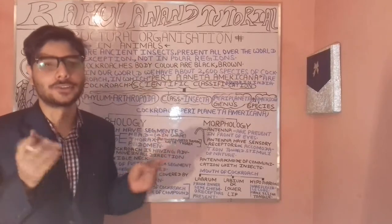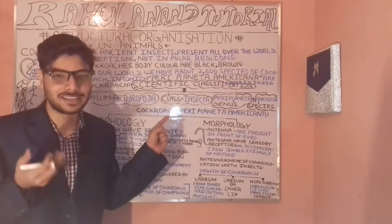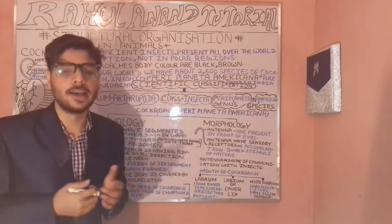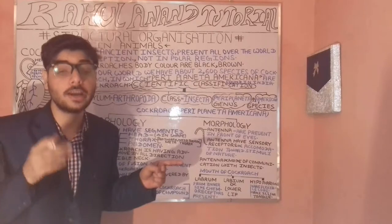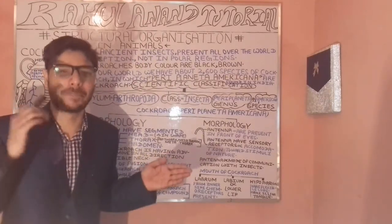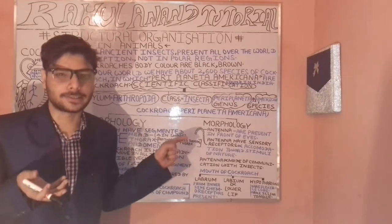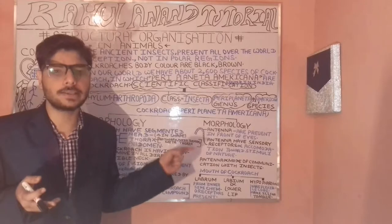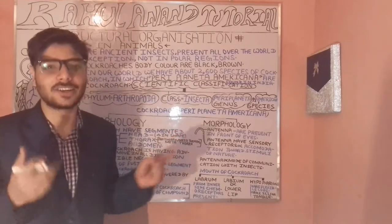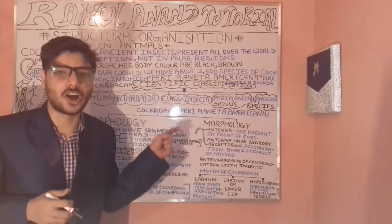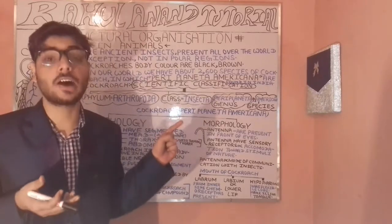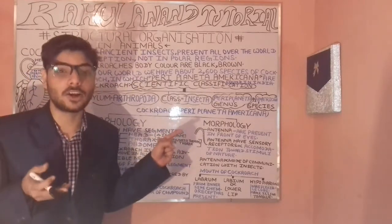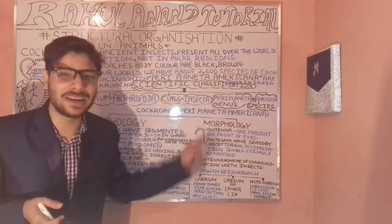Now let's understand how many species of cockroaches are present. Species refers to the mechanism by which ancestors and parents produce offspring resembling similar characteristics to their parents — for example, humans producing human babies, and lions producing cubs. There are around 2600 species of cockroaches.